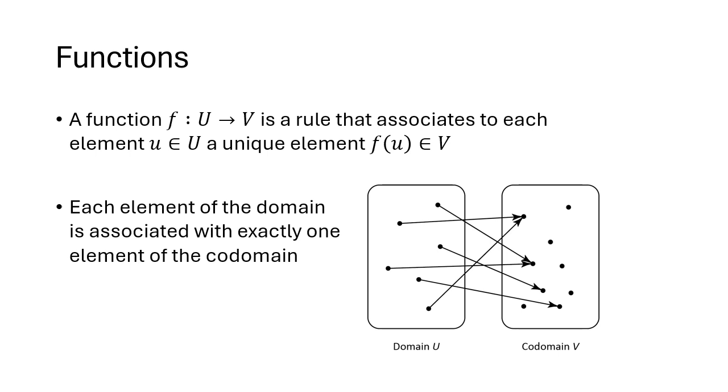A function is a rule that compares two sets, where we have a domain, which are the inputs to the function, and we have a codomain, which are the potential outputs of the function. To be a function, this rule has to assign each element of the domain a unique element in the codomain. Each element in the domain is associated with exactly one element in the codomain, and this has to be true in order for it to be a function in the first place.